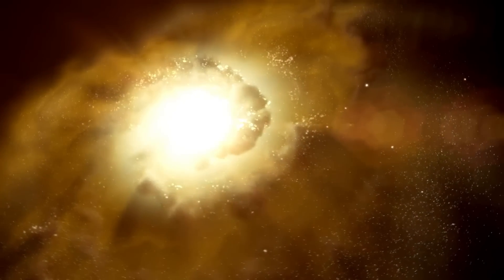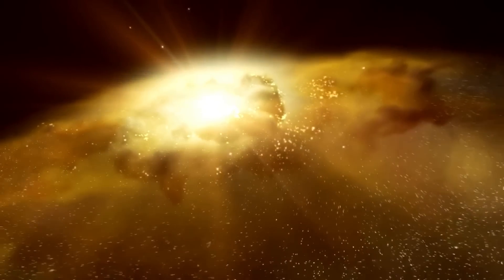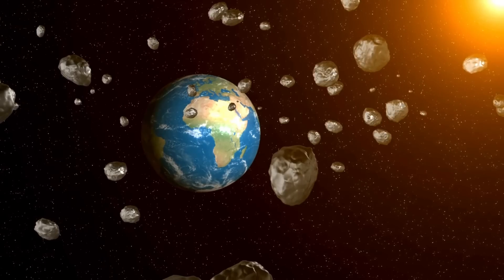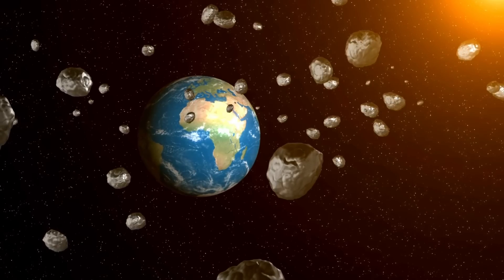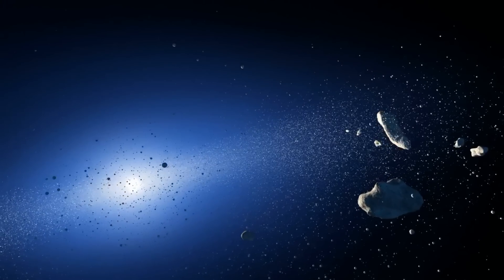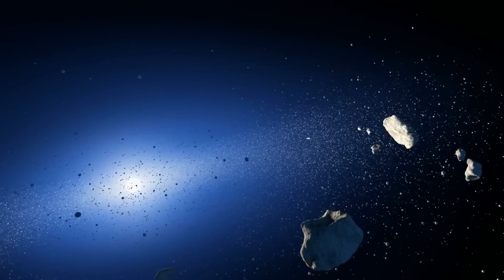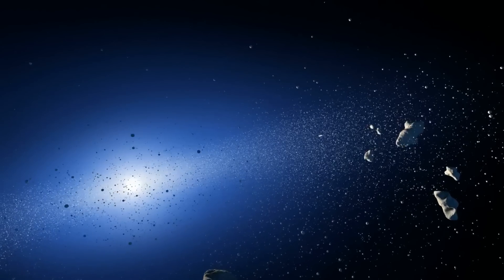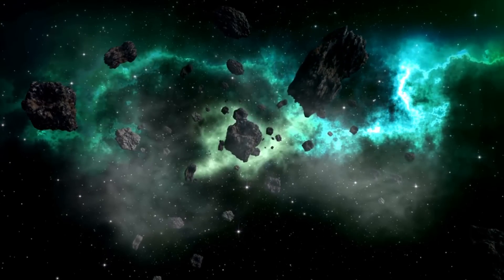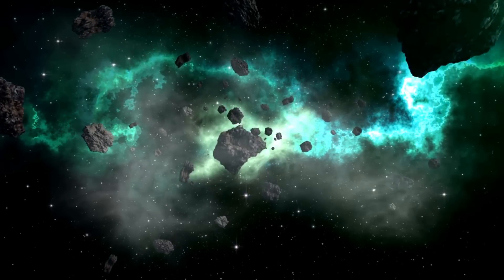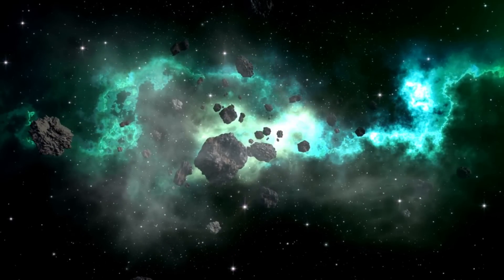Voyager 2's journey has been equally significant. After its successful flybys of Jupiter, Saturn, Uranus and Neptune, it has continued to provide valuable data about the outer reaches of our solar system. Voyager 2's observations of Uranus were particularly noteworthy, revealing its unique magnetic field, which is significantly tilted compared to the planet's rotational axis. This discovery challenged existing models of planetary magnetism and prompted further investigation into the magnetic states of other celestial bodies.